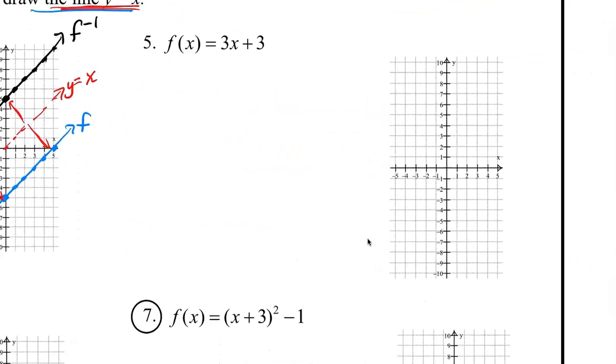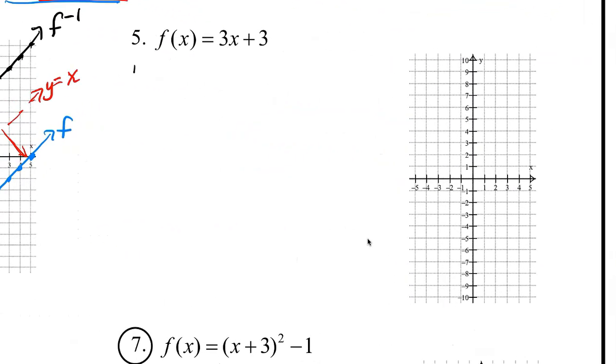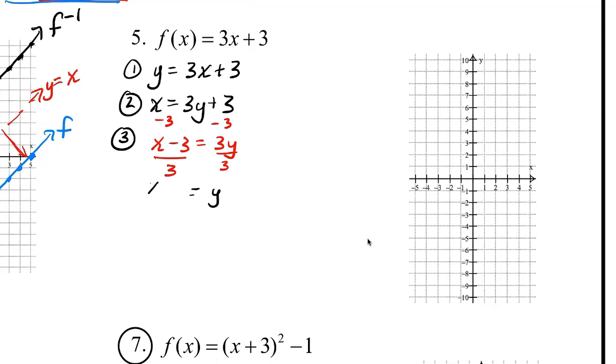Let's look at number 5. Again, those four steps: we're going to replace y for the f(x). We're going to interchange or swap the x and the y. And then we're going to solve for y. Solving for y, I'm going to subtract 3 from both sides. That would be x minus 3 equals 3y. Then we divide both sides by 3. So we'd have y equals (x minus 3) over 3. And the last step, we get rid of the y and go back to the proper notation. So we'd have f inverse of x equals (x minus 3) over 3.